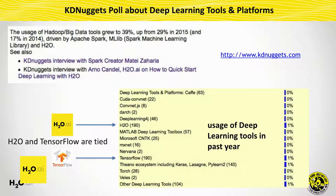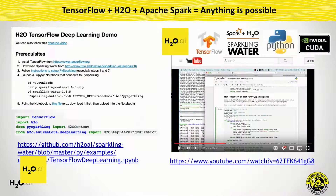That brings me to the landscape of deep learning tools. You see MXNet, TensorFlow, H2O, Keras, and Theano. These are all big ecosystems. TensorFlow and H2O deep learning were tied in this KDNuggets poll — I mentioned that yesterday. We're kind of up there, but the combination of the two will be even more powerful. There's a quick demo that shows TensorFlow inside of H2O.